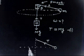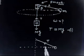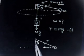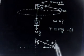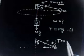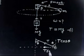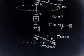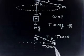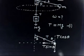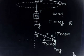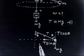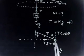Now let us look at the small mass m moving in a circle. The tension T has a component T cosθ in the vertical direction and T sinθ in the horizontal direction. There is also a force Mg acting downward on this mass. The mass m is moving with angular velocity omega.